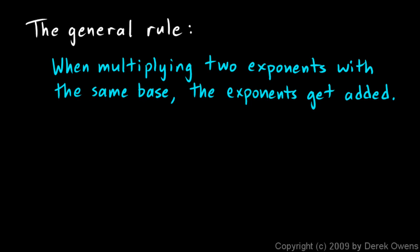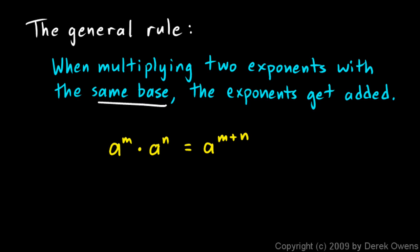We can state the concept as a general rule: when multiplying two exponents with the same base, the exponents get added. In mathematical form: a to the m times a to the n equals a to the power of m plus n. Here, a can be any number, variable, or mathematical expression — as long as both terms share the same base, you simply add the exponents.